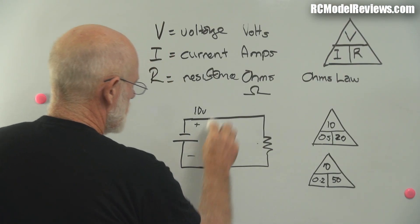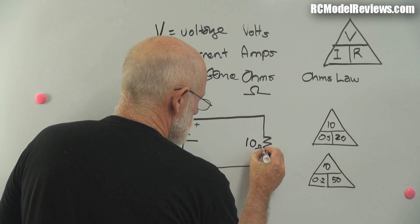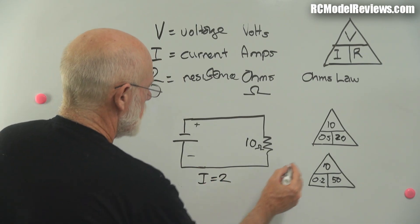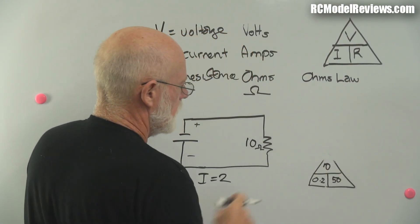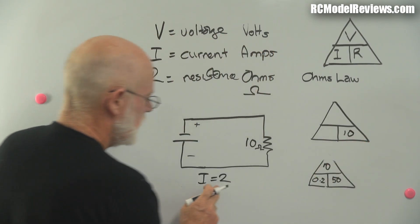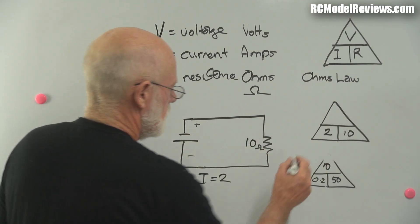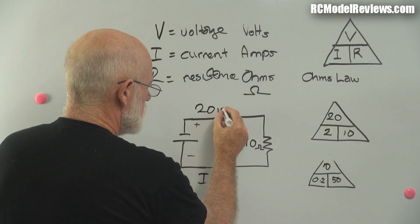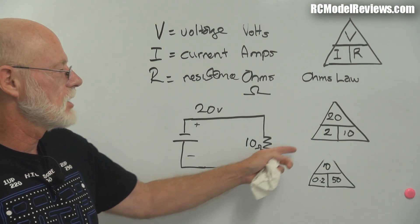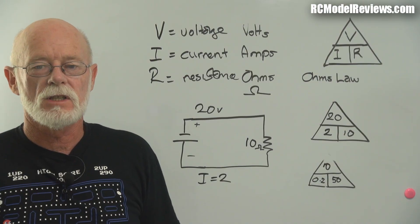Let's do the final example to show all the options. Let's say we've got a 10-ohm resistor and we want two amps flowing through our circuit, so I equals 2. In the Ohm's Law triangle, we know the resistance is 10 and the current is 2. Because these are on the same line, we multiply them together to get the missing value: 2 times 10 equals 20. So we need 20 volts to get a current of 2 amps through a 10-ohm resistor. Even if you don't know how to rearrange algebraic formulas, this triangle makes it simple.